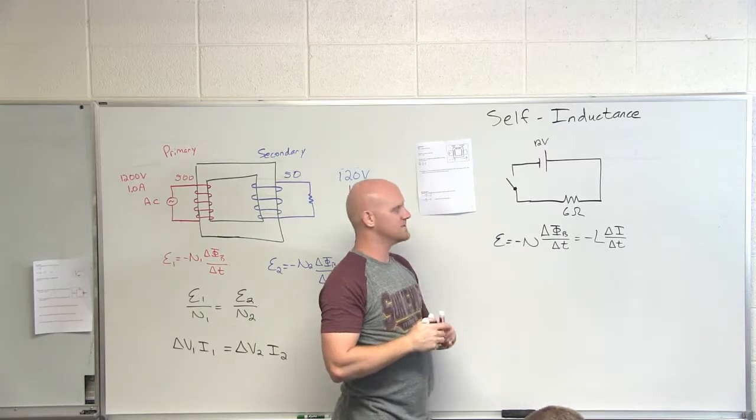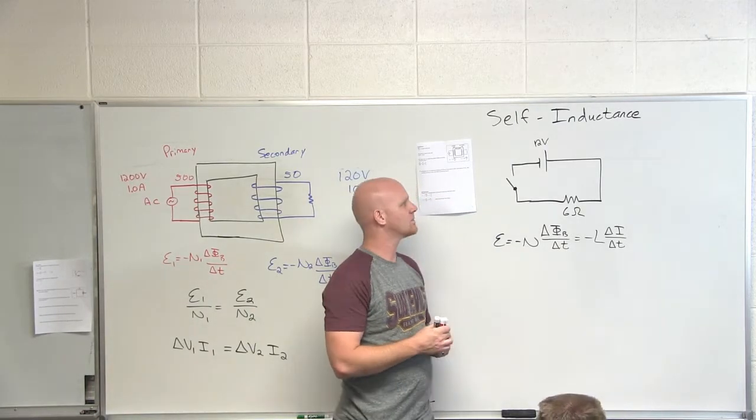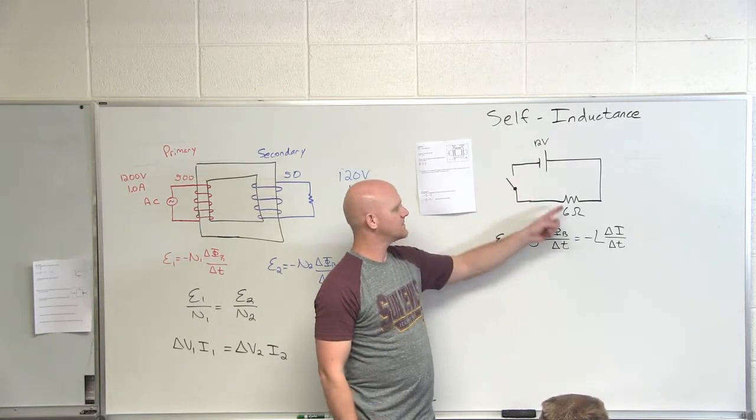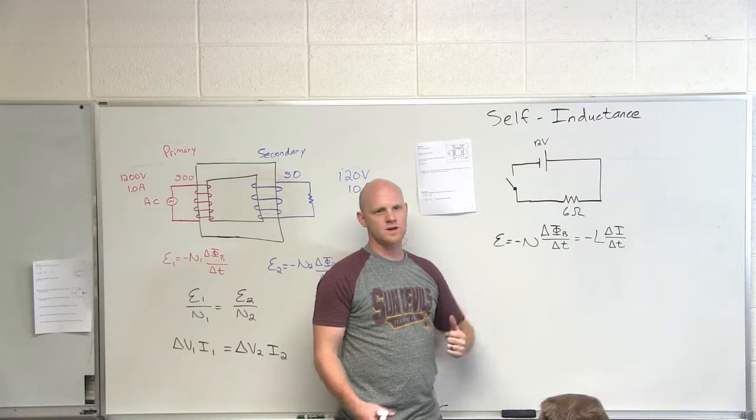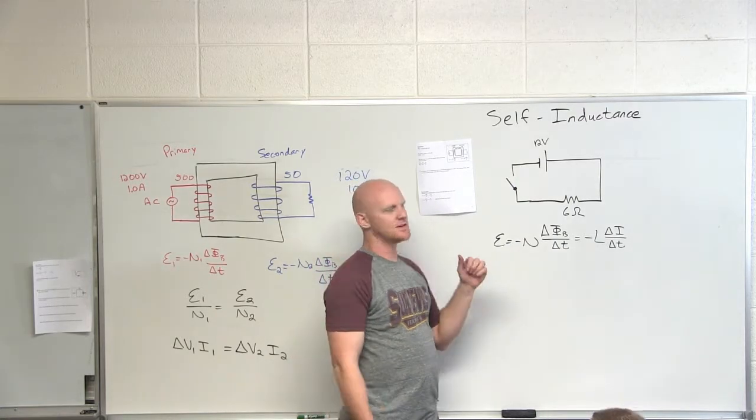What would be the current in this circuit typically? So 12 volts, 6 ohms, delta V equals IR by Ohm's law, so we get 2 amps current. Cool, but we don't hit that 2 amps immediately, it actually grows.